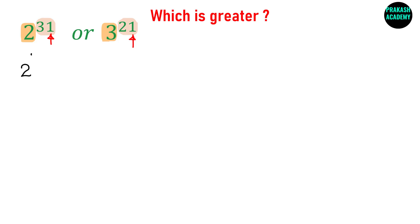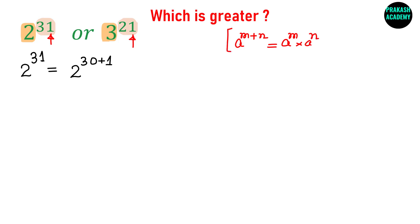The first number is 2 raised to the power 31. Now 31 we can write as 30 plus 1. If you remember the rules of power: if we have a raised to the power m plus n, then this can be written as a raised to the power m multiplied by a raised to the power n. Here a equals 2, m equals 30, and n equals 1. So I can rewrite this as 2 raised to the power 30, multiplied by 2 raised to the power 1, which is just 2.